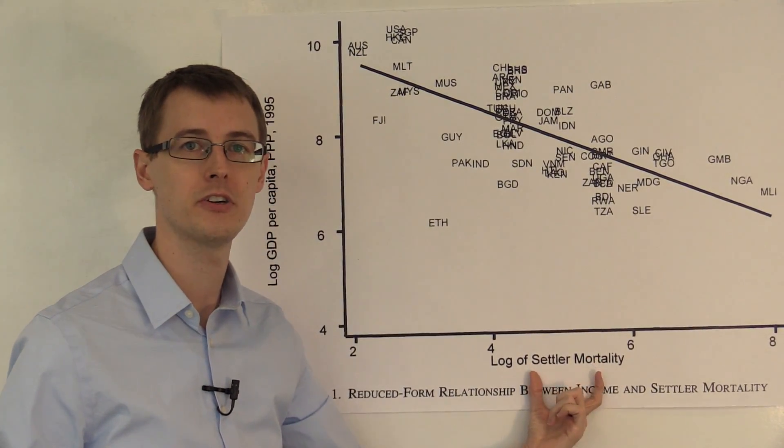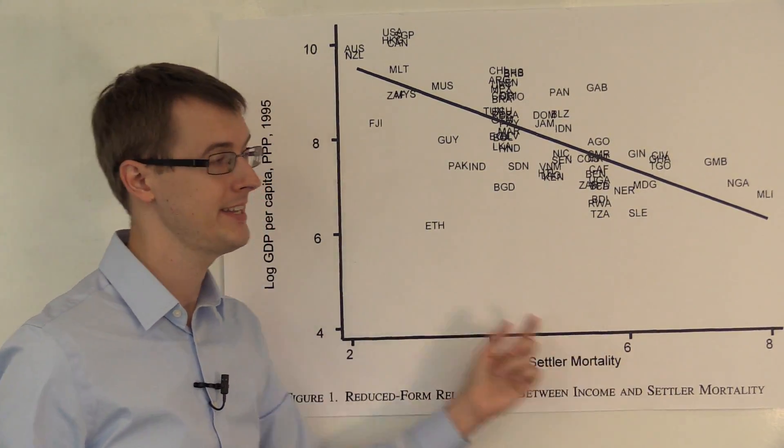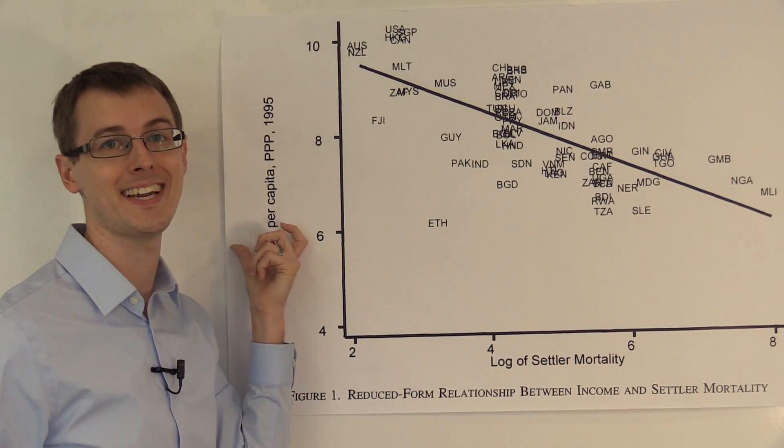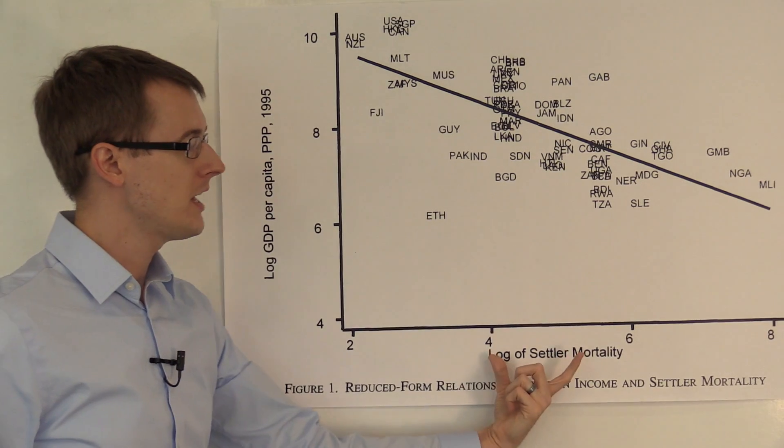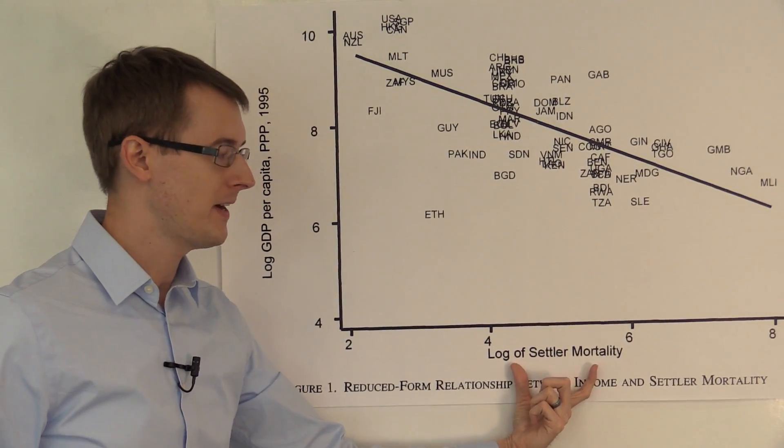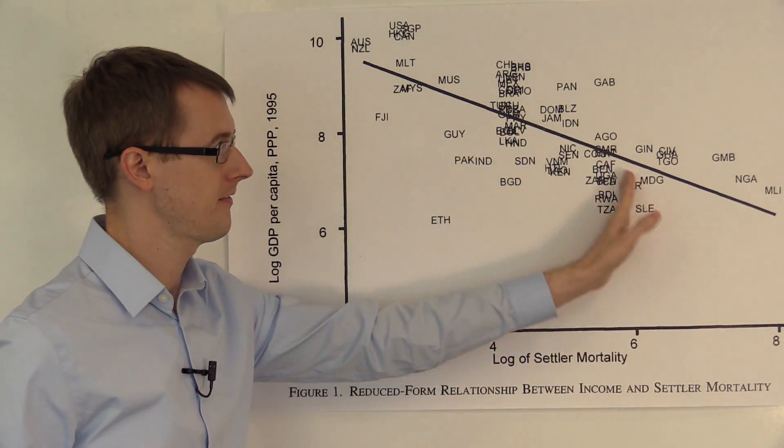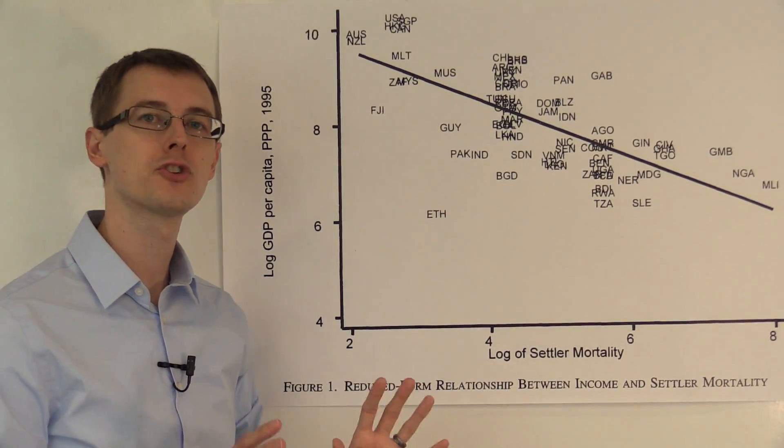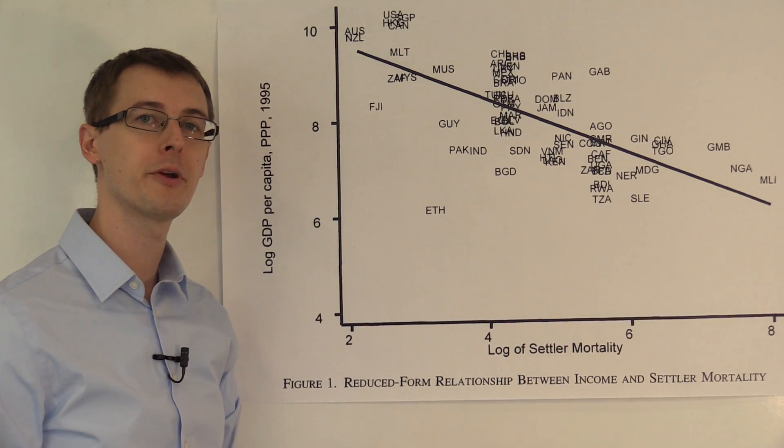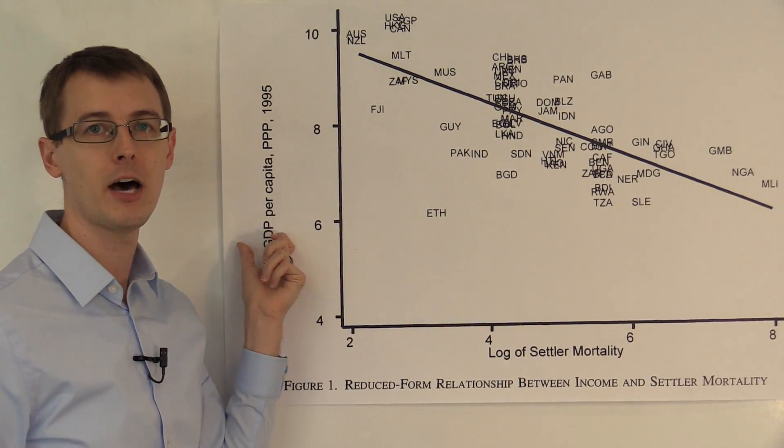this is a variable that's measured in the year 1600 to 1800. This is a variable that's measured in the year 1995. So assuming that this instrumental variable satisfies those three assumptions, we know that this correlation here reflects the true causal effect of property rights on economic development.